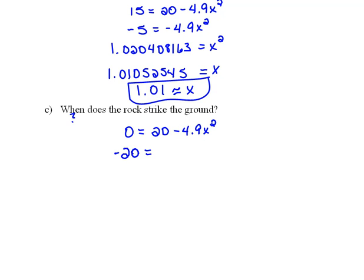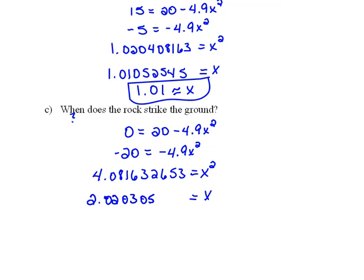So negative 20 equals negative 4.9x squared. Dividing both sides by negative 4.9, we get 4.081632653. And then taking the square root of both sides, we get x equals 2.020305089, which means x is about 2.02 seconds. So after about 2.02 seconds, the rock will hit the ground.